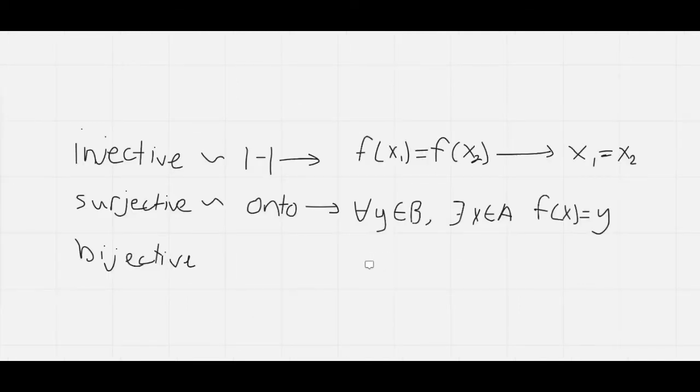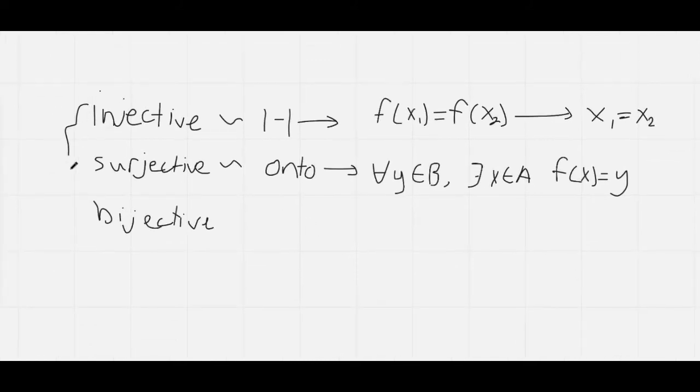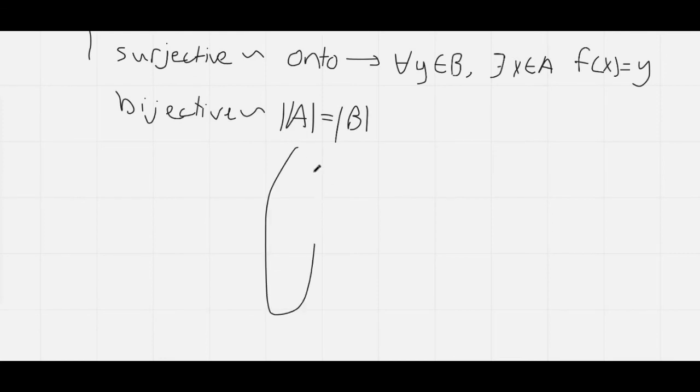And like I said before, a bijective function is just injective and surjective at the same time, which means that, which would imply that the cardinality of A has to be equal to the cardinality of B. Because that means that every element in B has a value of X corresponding to it, and it is the only value of X corresponding to it. So there's no overlap, and it's just a simple, really I think it should be called one to one, just a bijective correspondence.